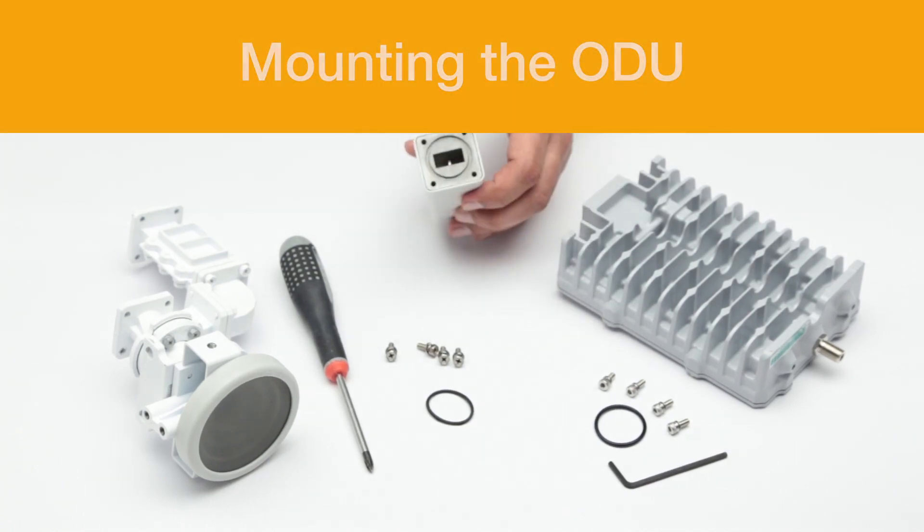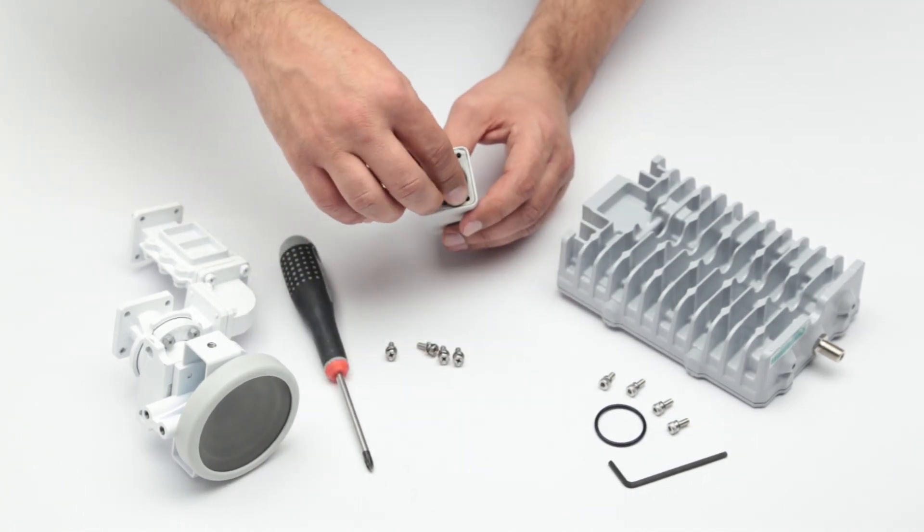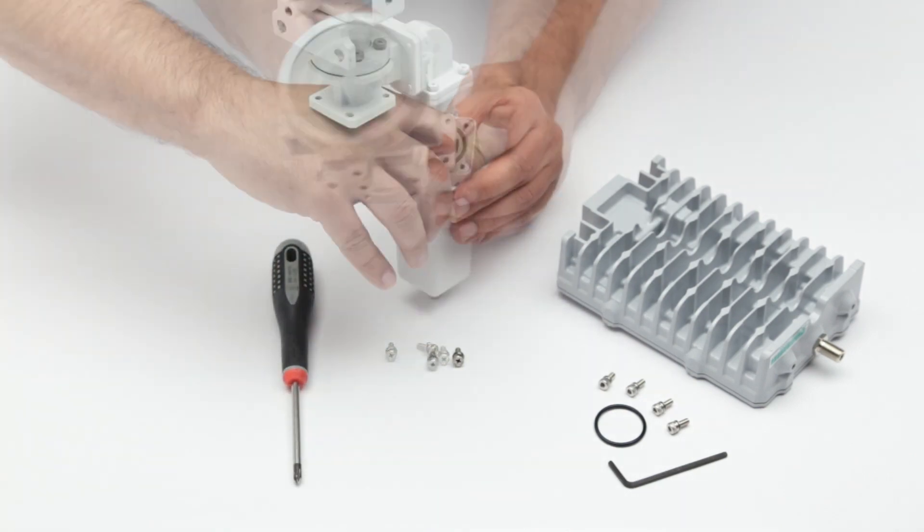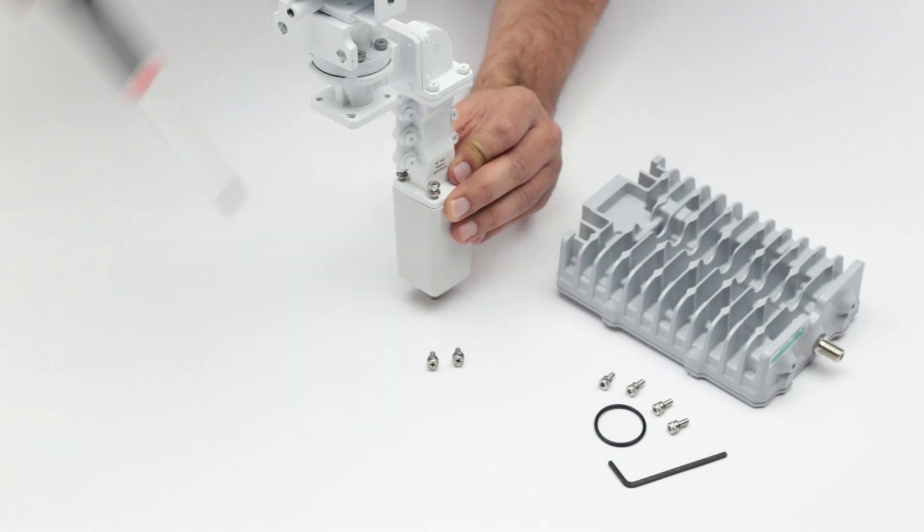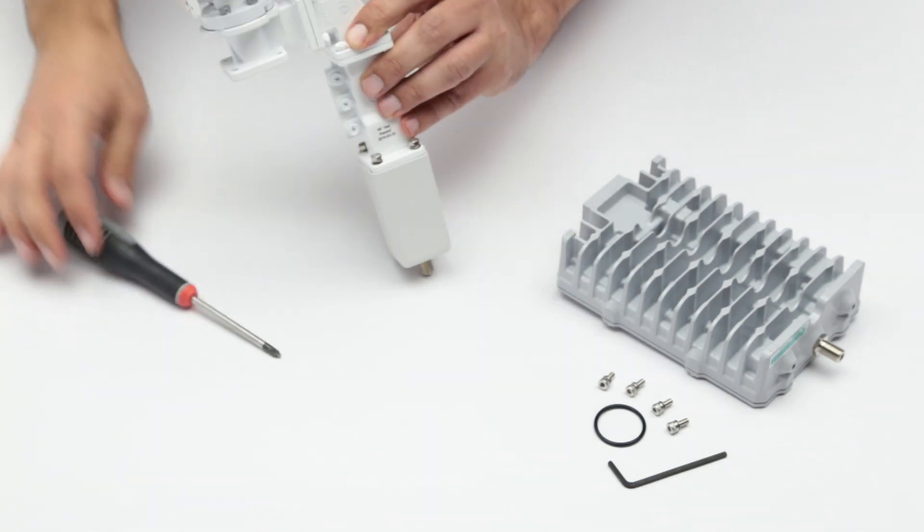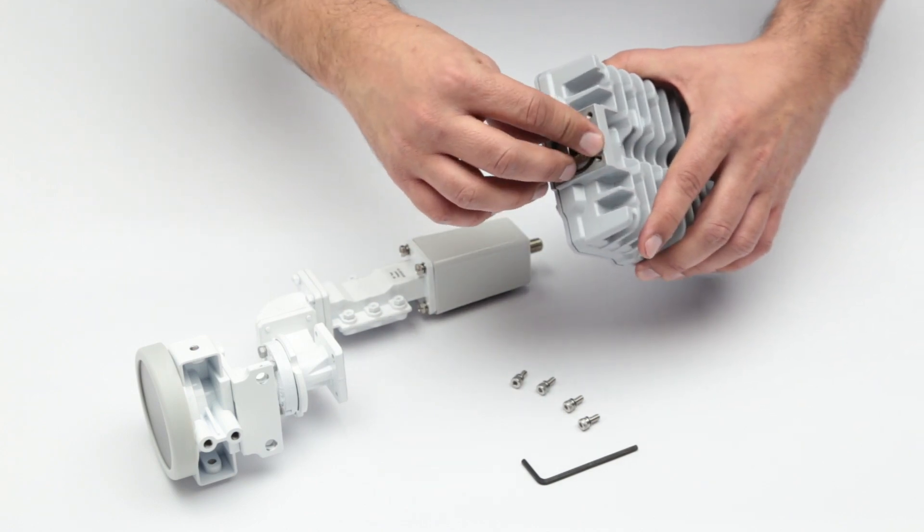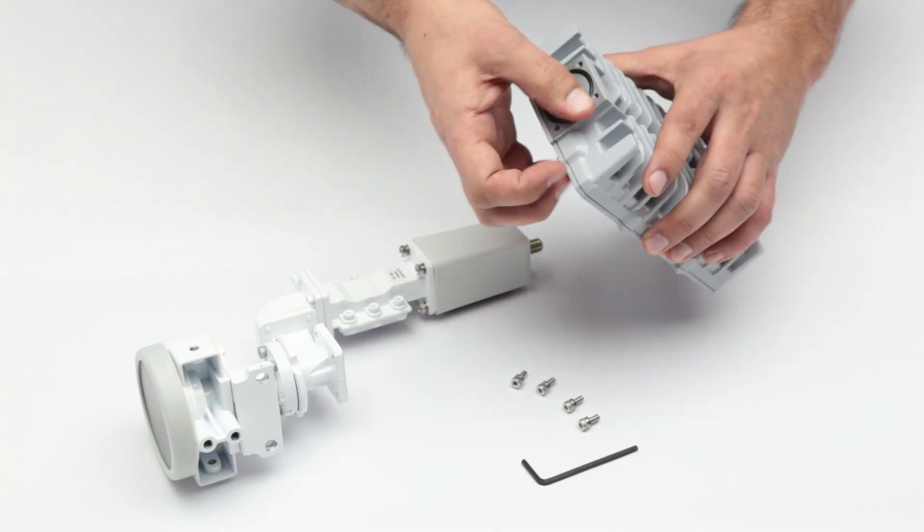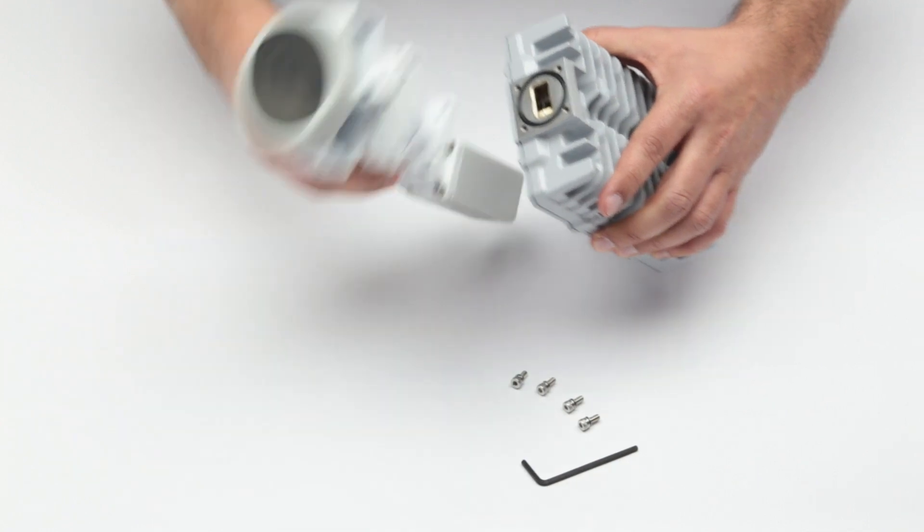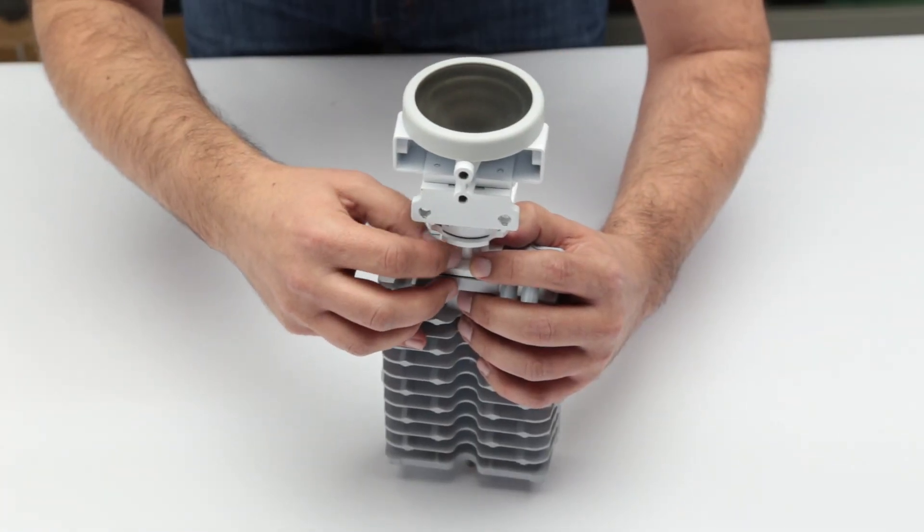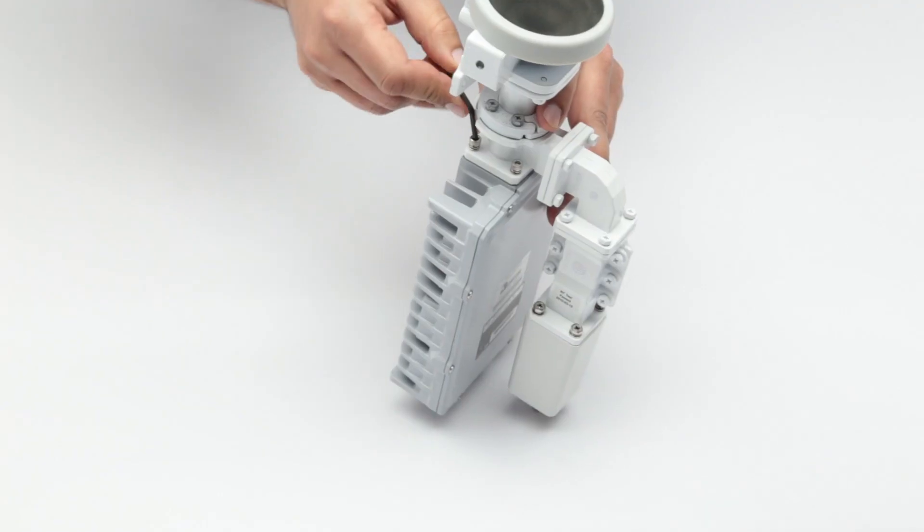Mounting the ODU. To mount the ODU, you must first assemble the feed to the LNB and the transmitter. To do so, you must begin by joining the feed to the LNB using the proper screw. Once they are joined, assemble them to the transmitter.